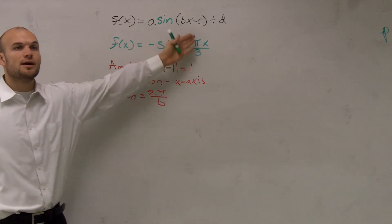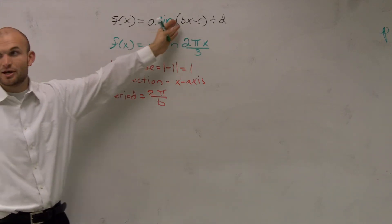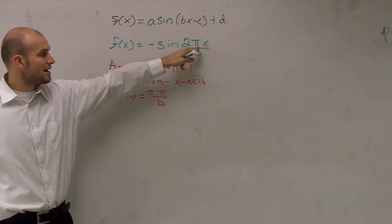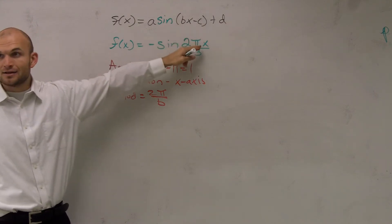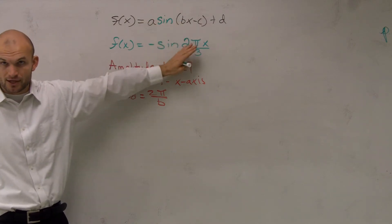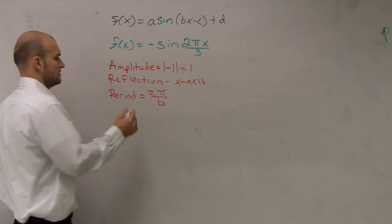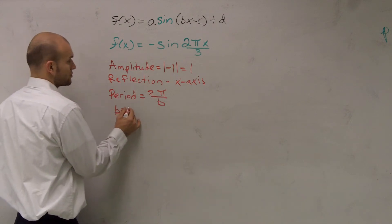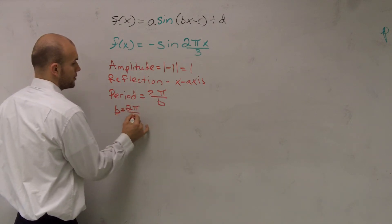So, remember, we need to figure out what is the number in front of x. So, so far, I have a 2 and a pi that are in the numerator. But remember, both those numbers are being divided by 3. So my b is equal to 2 pi over 3.